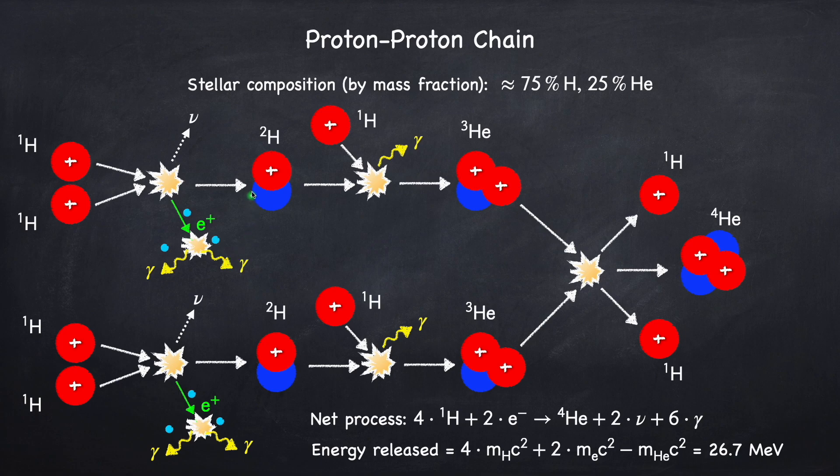Okay, so then the deuteron will bump into another proton, and they're going to fuse into a helium-3 nucleus. Then the helium-3 nucleus will bump into another helium-3 nucleus, which in this schematic was made via the same process we just described, but it doesn't have to be. You just need a helium-3 nucleus from somewhere. And these two bump together, and they fuse into a helium-4 nucleus, an alpha particle, and pop off two protons.